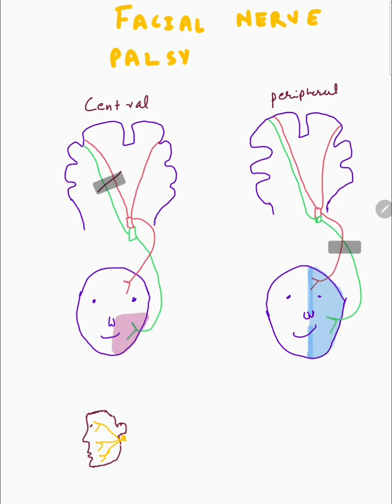Now if we have a peripheral lesion, the entire face will be affected because all of these fibers combine below the nucleus. Below the nucleus, all of the fibers combine and there is no distinction between ipsilateral and contralateral fibers. So when you have a lesion to the peripheral nerve, all of these fibers will be affected, resulting in no sparing of the forehead — the entire face will be affected.